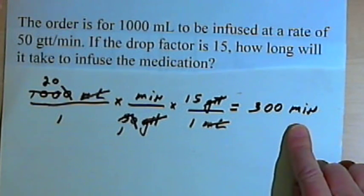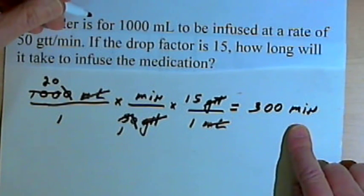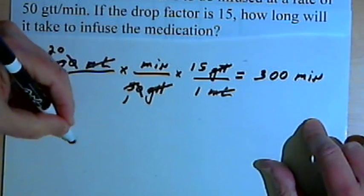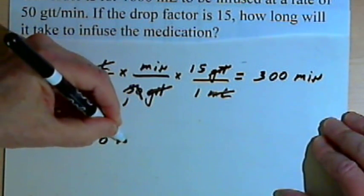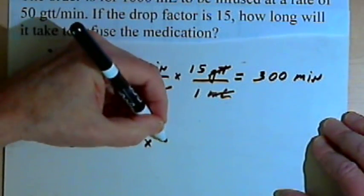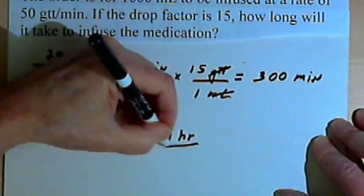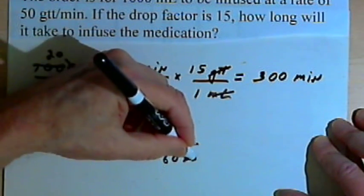Now with a number like this, I don't want to leave that as minutes. I want to convert that into hours. So let's remember that there are 60 minutes in an hour, so I've got 300 minutes times 1 hour over 60 minutes.